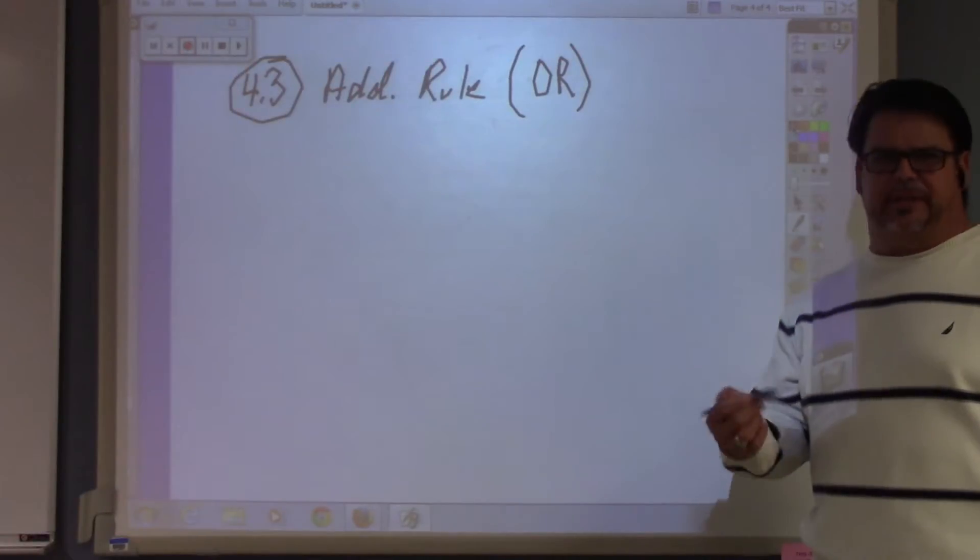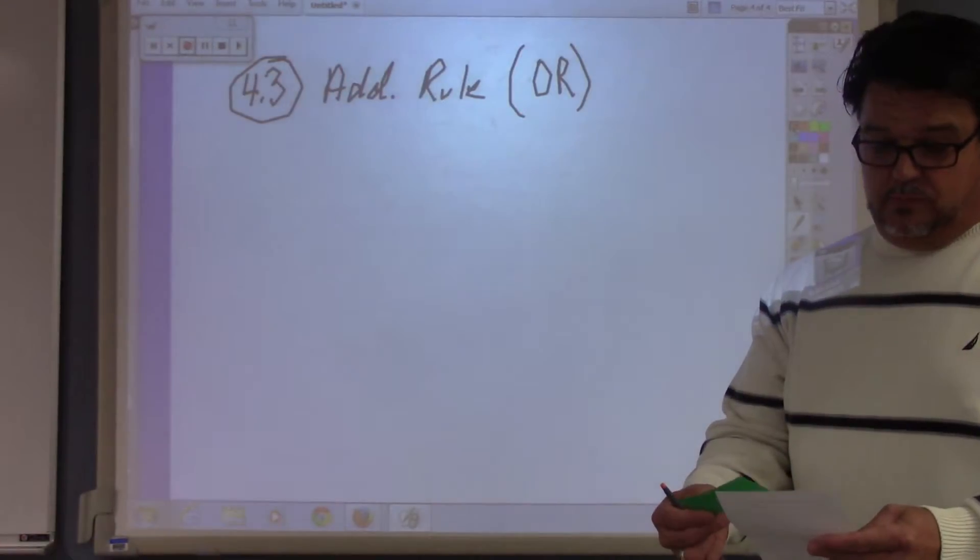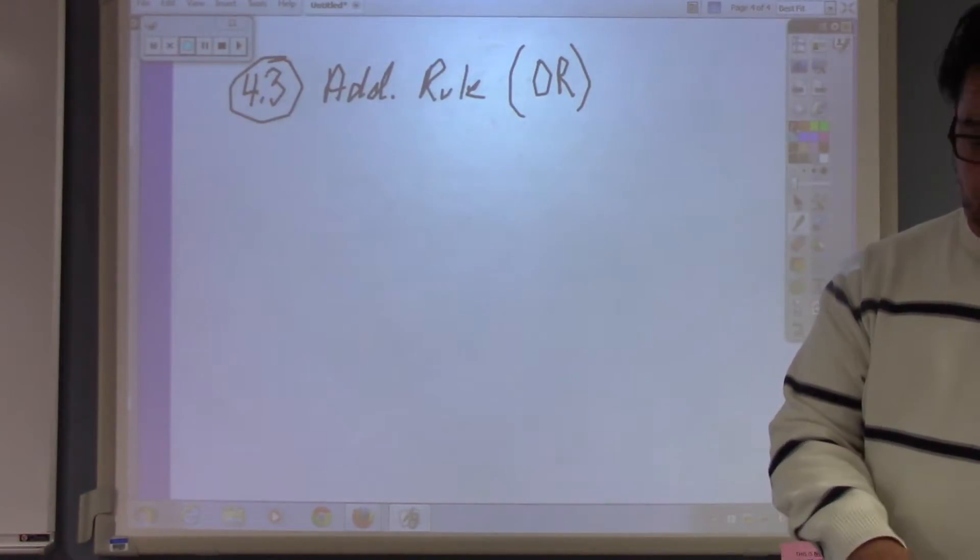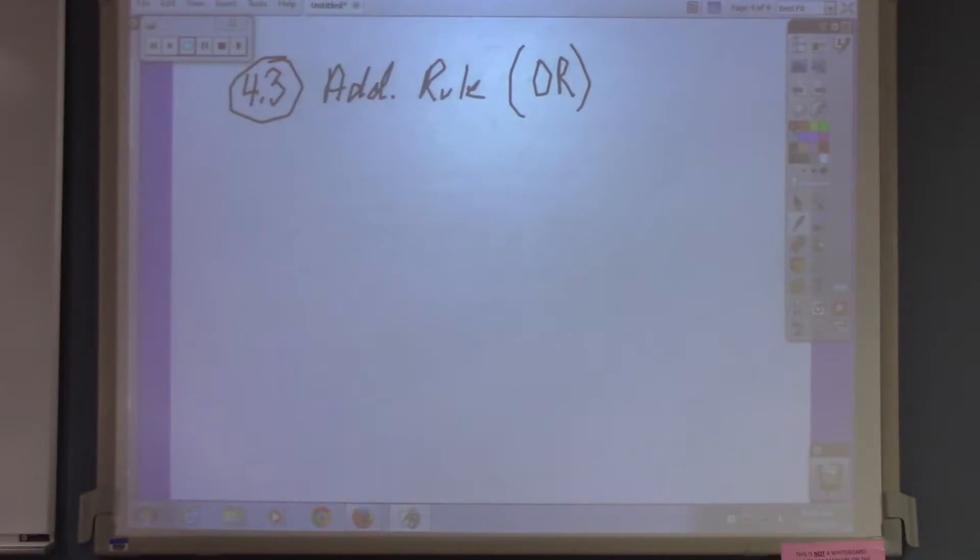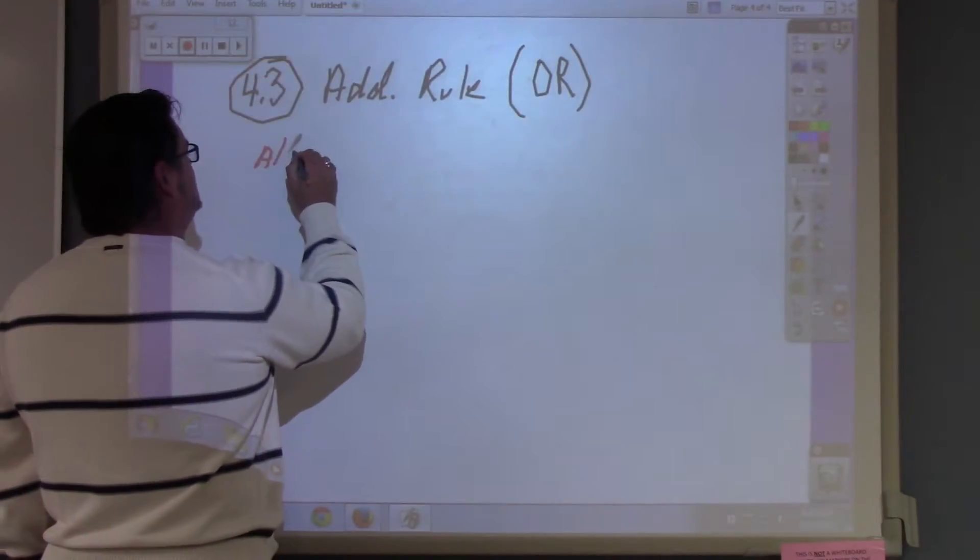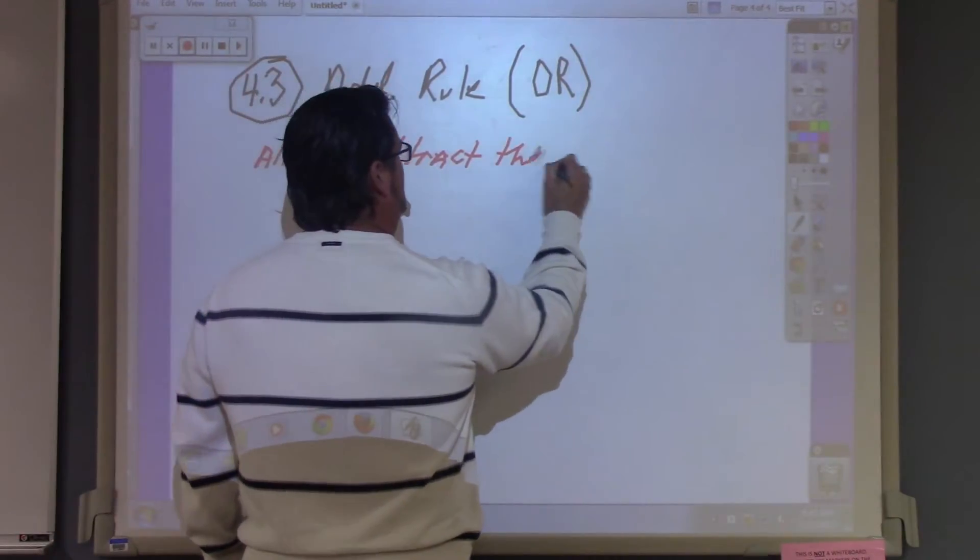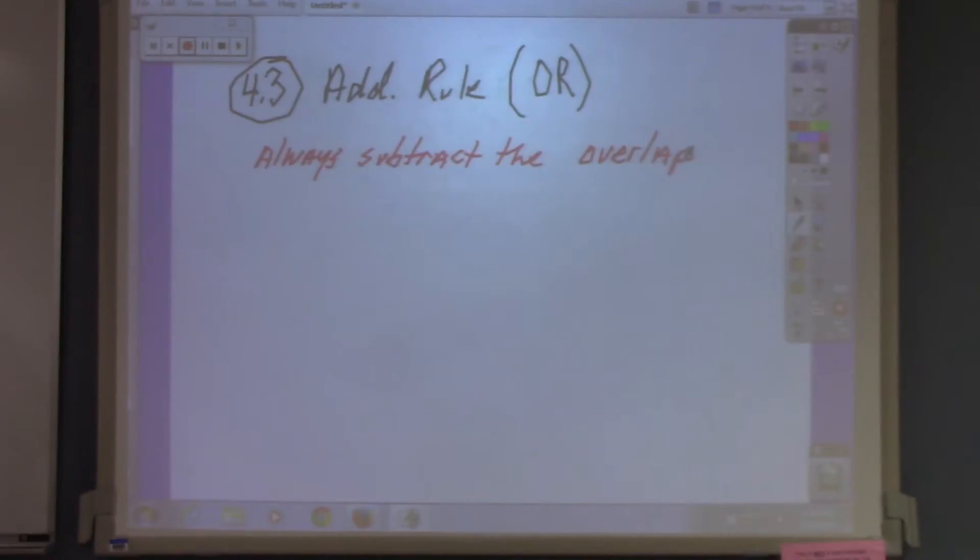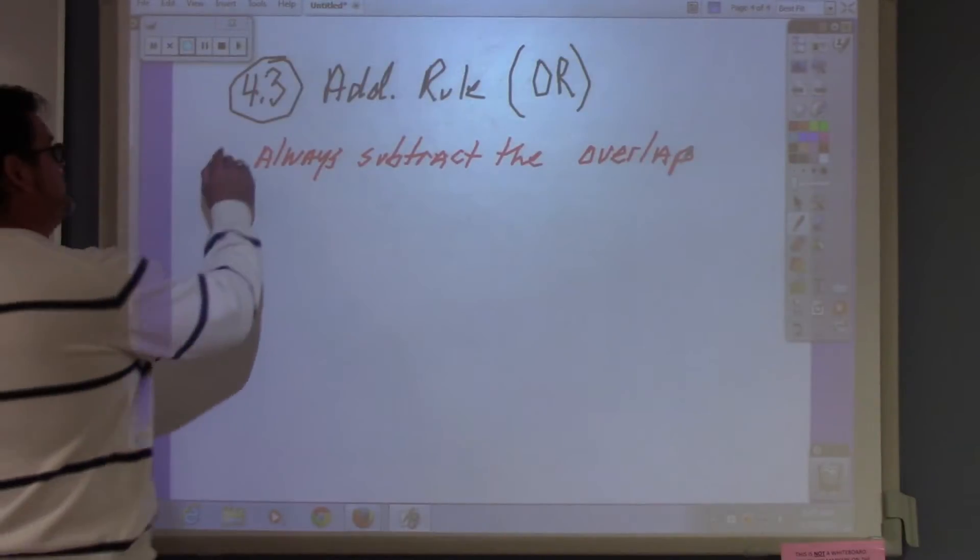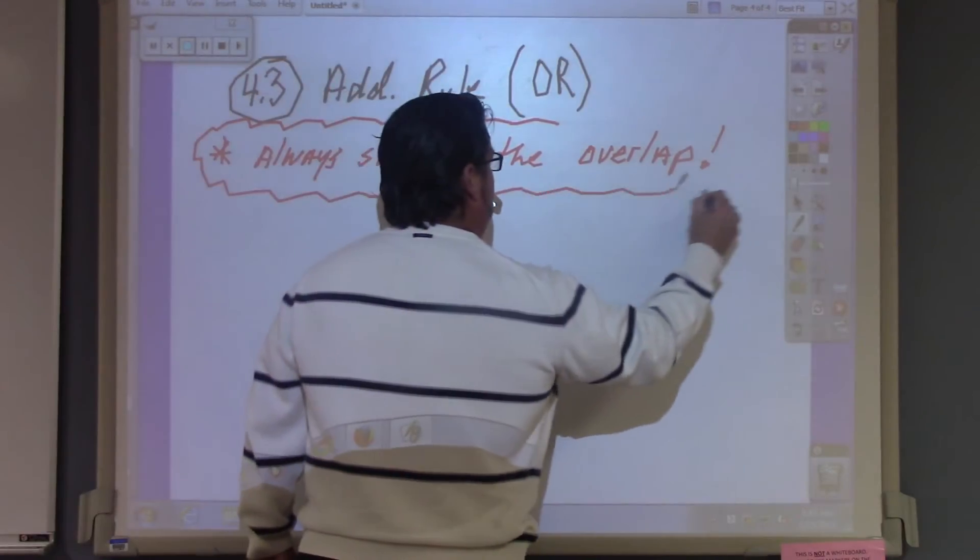Now, there's one thing that I'm going to write in red. If I write it in red, what do you think that means? It's important. Dang old important. Always subtract the overlap. It's as simple as that. Always subtract the overlap. Star, exclamation point, red cloud around it. That means this is very important. Because if you don't subtract the overlap, you will get it wrong.